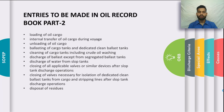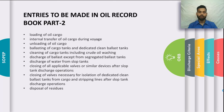Entries in ORB Part 2, carried by oil tankers of 150 gross tonnage and above, include: loading of oil cargo; internal transfer of oil cargo during the voyage; unloading of oil cargo; ballasting of cargo tanks and dedicated clean ballast tanks; cleaning of cargo tanks including crude oil washing; discharge of ballast except from segregated ballast tanks; discharge of water from slop tanks; closing of applicable valves after slop tank discharge operations; closing of valves for isolation of dedicated clean ballast tanks after operations; and disposal of residues such as sludge.